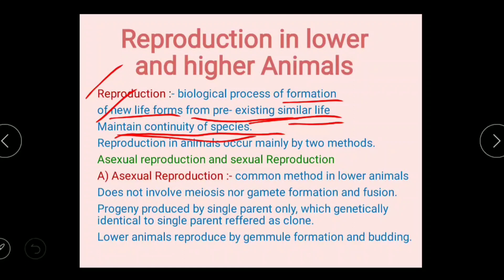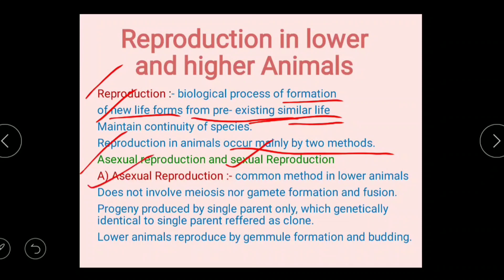Reproduction in animals occurs mainly by two methods: asexual reproduction and sexual reproduction. Asexual reproduction is a common method in lower animals. It does not involve meiosis or gamete formation.